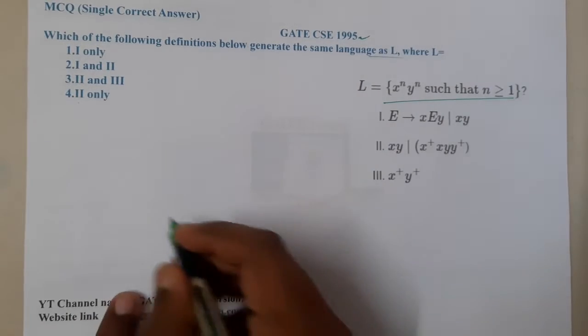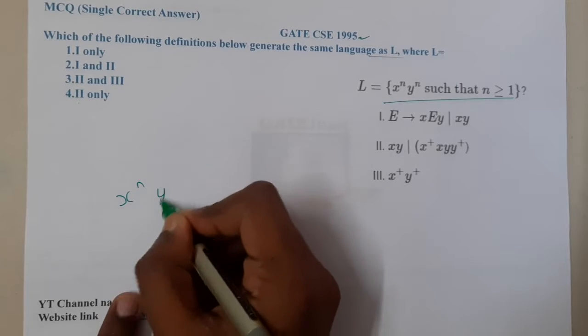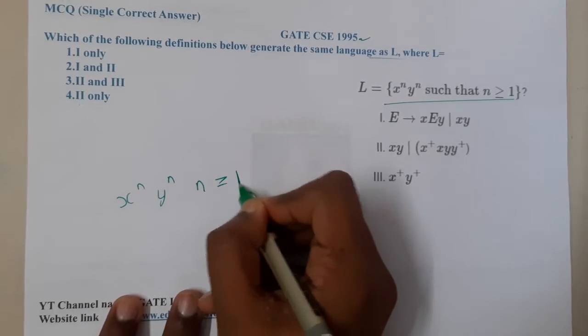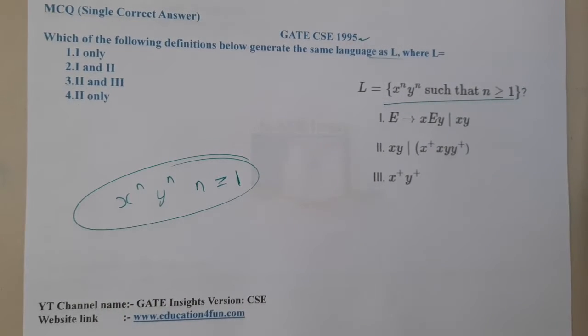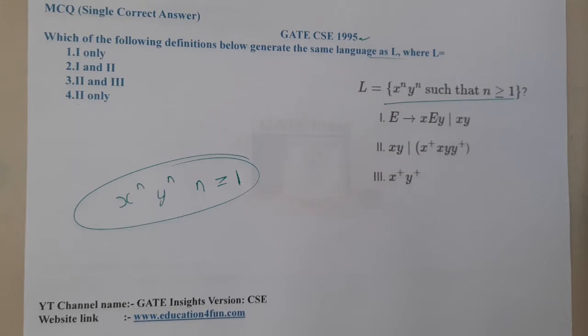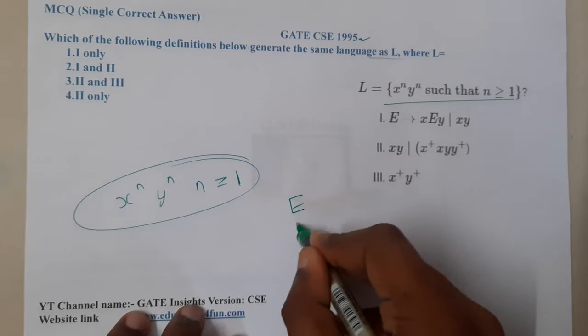It is saying indirectly x power n y power n, where n value should be greater than or equal to 1. So I think we can conclude one thing here. Option one is compulsory correct because it is just the grammatical representation. From E I can directly generate xy, or again I can take E and generate xy.